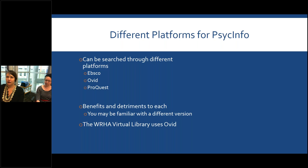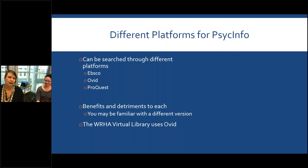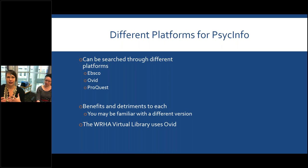PsycINFO can be searched through different platforms. Some you may have come across are EBSCO or ProQuest. We used to have the EBSCO one at the University of Manitoba; they recently switched to the Ovid platform, and we have the Ovid platform as well. For librarians doing more complicated searching, the Ovid platform is much more robust and able to accomplish complex, precise searches, which is why we've stuck with it. But it is a little less intuitive than EBSCO or ProQuest — it's not just punching something in and getting results.